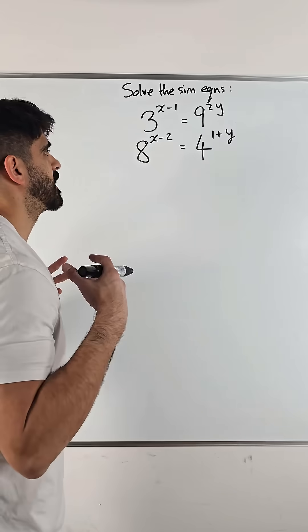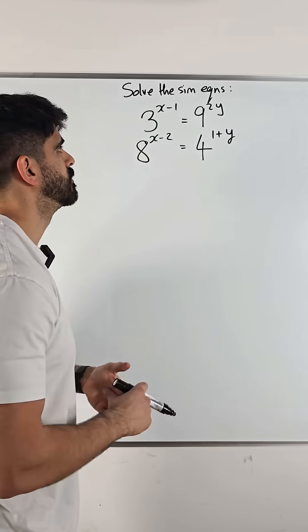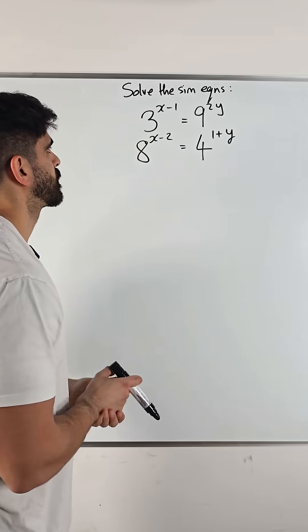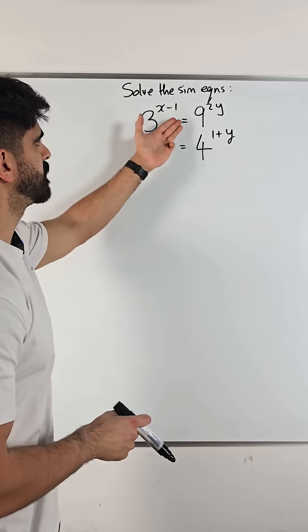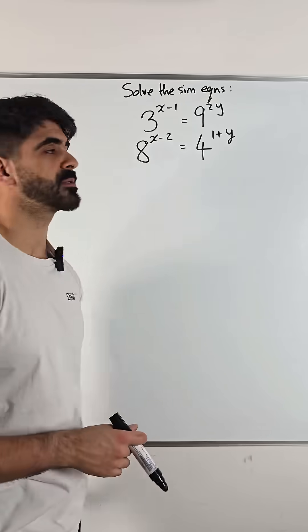Well, I'm thinking about bases, keeping them equal so we can equate powers. If I said 3 to the power of something equals 3 to the power of something, then the powers must be the same.